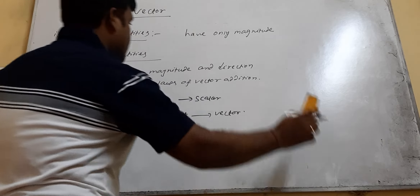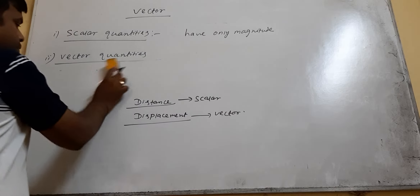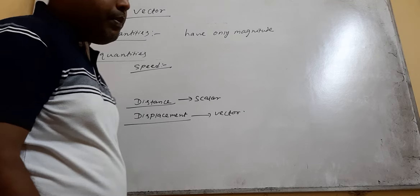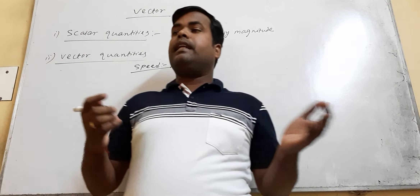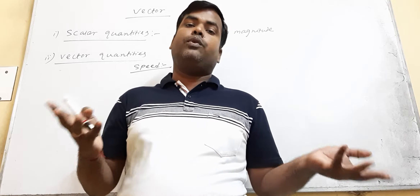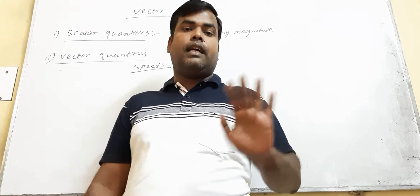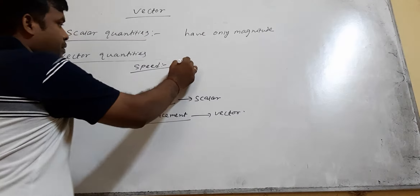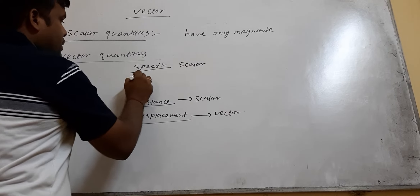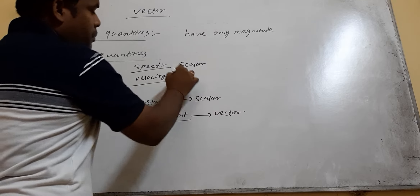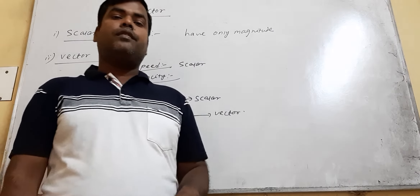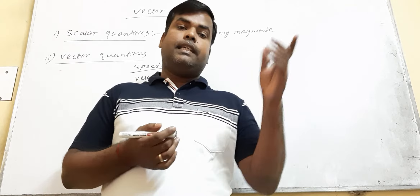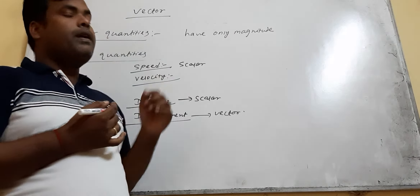Similarly, speed is the distance travelled by a body per unit time. As distance is scalar, speed is also scalar. But velocity is the displacement travelled by a body per unit time. As displacement is a vector quantity, velocity is also a vector quantity.